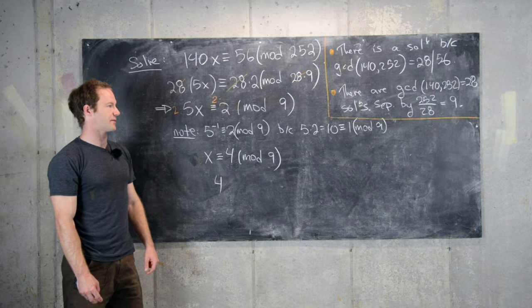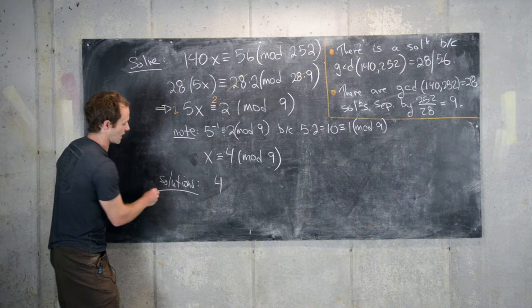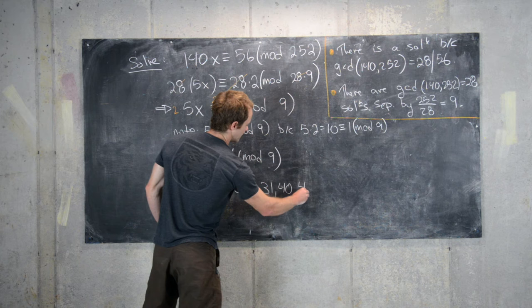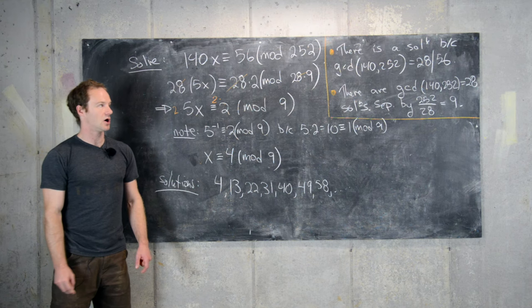So that means here we have our solutions are given by 4. And then we can add 9 to that. 13 is the next solution. We can add 9 to that. 22 is the next solution. 31 is the next solution. 40, 49, 58. So I'm not going to write down all 28 solutions, but this kind of gets the point across. It's the end of the video.